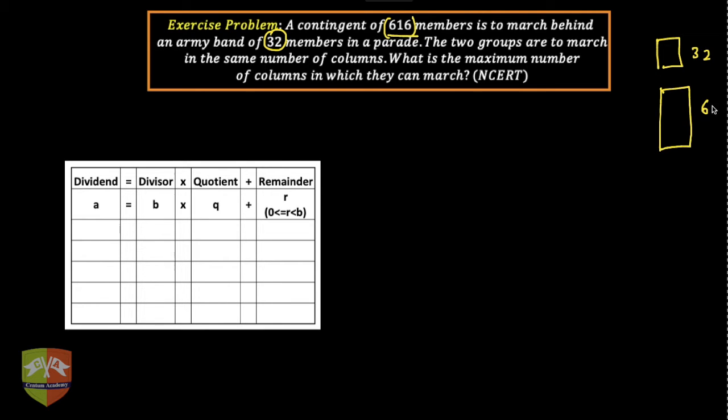So there will be a band of 32 members followed by a contingent of 616 members. The two groups are to march in the same number of columns. If you have seen Republic Day parade or any other parade in your school, there are columns in which the contingent marches. The two groups are to march in the same number of columns—the army band will be followed by the contingent and the number of columns is the same.